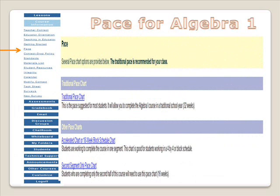Algebra 1 is designed to be completed in 32 weeks if taking both Segments 1 and 2. It should take you no more than 16 weeks to complete Segment 1 and 16 weeks to complete Segment 2. After completing your welcome call and being activated into Algebra 1, your teacher will email you a pace chart with your dates filled out for you. We highly recommend printing out this pace chart and marking off assignments as they are completed. You will receive weekly reminders telling you what needs to be completed each week and whether or not you are on pace.